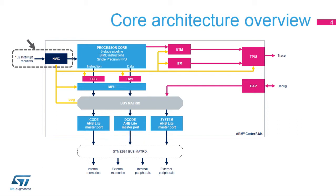All interrupts, including the core exceptions, are managed by the NVIC. The NVIC and the processor core interface are closely coupled, which ensures a low interrupt latency and enables efficient processing of late-arriving interrupts. Access to the NVIC's control and status registers is performed through the private peripheral bus, or PPB, internal to the Cortex-M4 CPU.